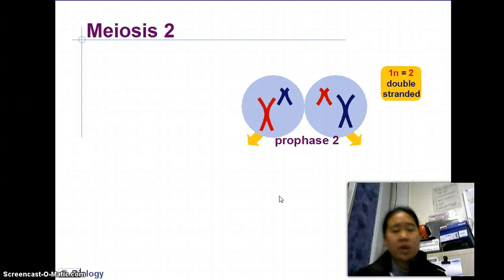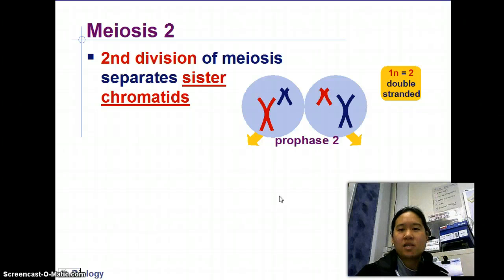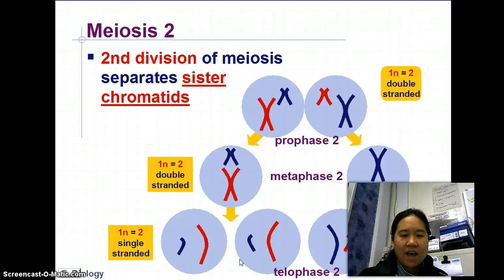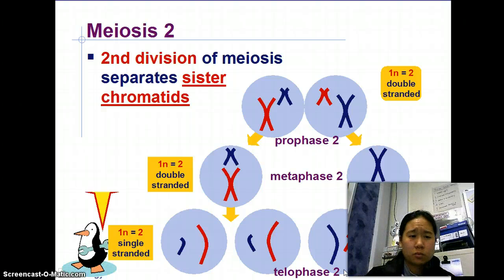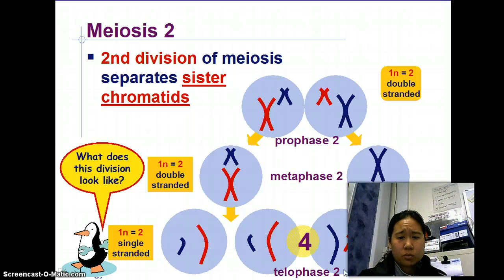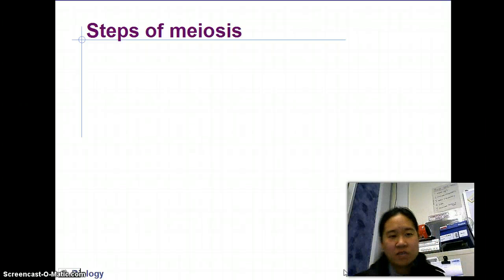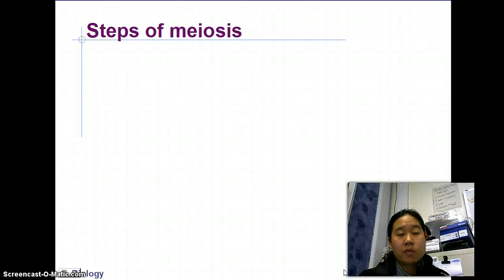In meiosis II, we don't go through S phase again — we already have our DNA. We divide the sister chromatids. After the sister chromatids divide, we have half the number of chromosomes we started with. We now have four cells instead of two. In sperm, all four become functional. In eggs, it works differently — you get one big fat egg and three polar bodies that feed the original egg. Girls and guys differ in that way, but the steps are the same.